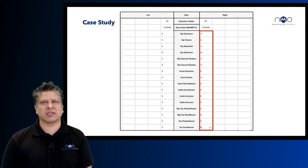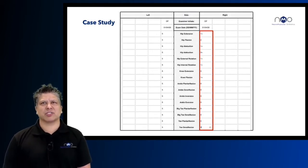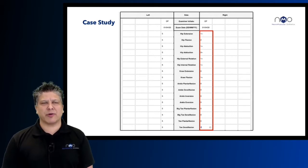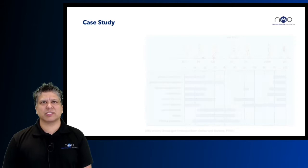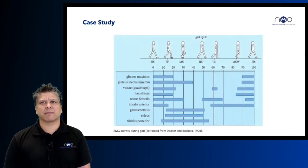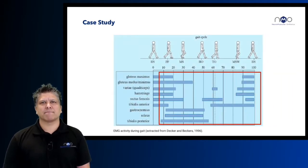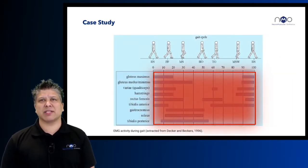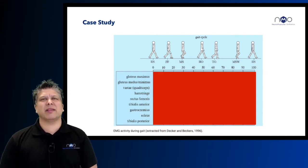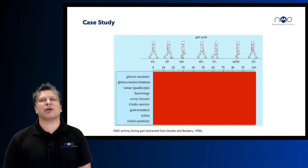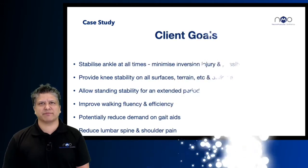Looking at Jonathan's muscle power, you can see on that right side very little muscle power in any groups. He has only a grade one-plus in his glutes and only a one-plus in the hip abductors. Basically every single muscle group in the lower limb on the right side is significantly affected.